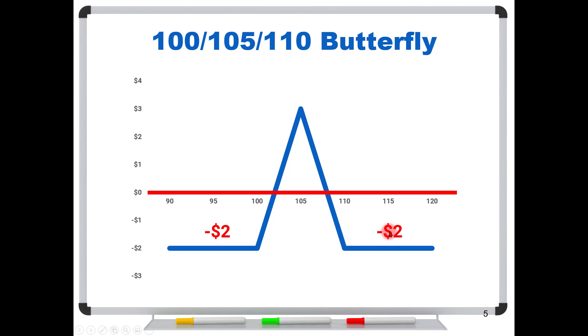And if the stock price is at 110 or higher at expiration, you would also be down two bucks. And then if the stock is right here at the center strike at 105, you would make your maximum gain of three.